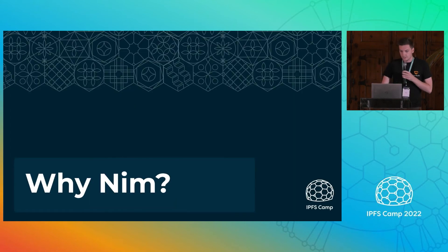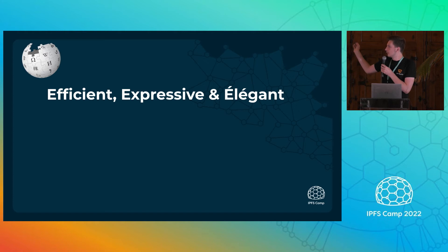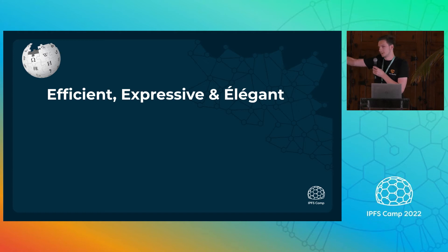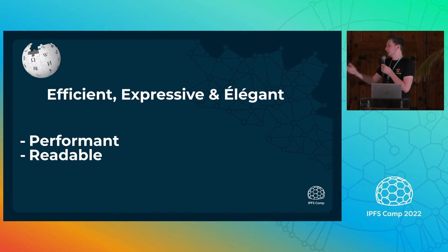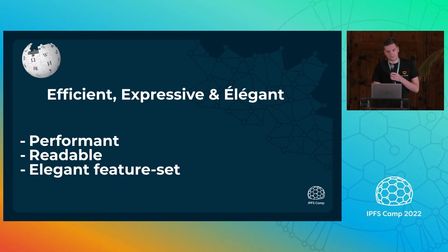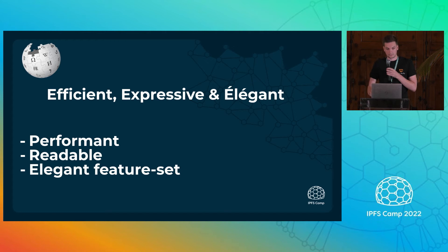So why Nim? If we go to Wikipedia, the goal of Nim is to be efficient, expressive, and elegant. Efficient means performance — we want very good performance when you build something with Nim. Expressive means it's easy to read, easy to write, easy to understand. And elegant is a bit more vague, but it tries to have a feature set which makes sense and is nice to use overall.